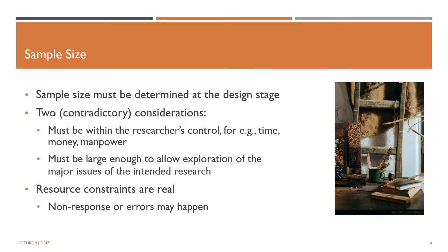The sample size has to be determined at the outset. Two considerations are paramount. One, it must be achievable within the researcher's control — that is time, money, and manpower. And two, it must be rich enough to allow exploration of the major issues of the intended research. These considerations are contradictory, so the ultimate decision represents a compromise. However, non-response or errors mean that the final sample will always be smaller than the selected sample size. For this reason, the researcher chooses a larger sample size than what is required so that they will get the final sample size that they want.